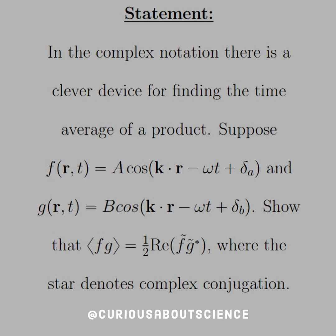Suppose that we have f(r,t) equal to A cosine k dot r minus omega t plus delta a, and g(r,t) equal to B cosine same thing with delta b. Show that the time average product fg is equal to one-half of the real part of f tilde times g tilde star, where the star denotes the complex conjugate.